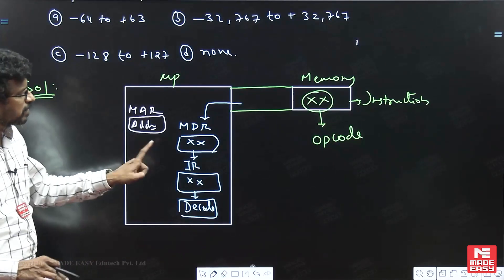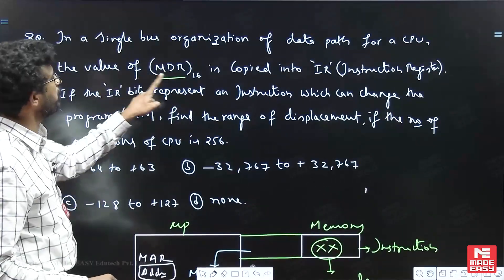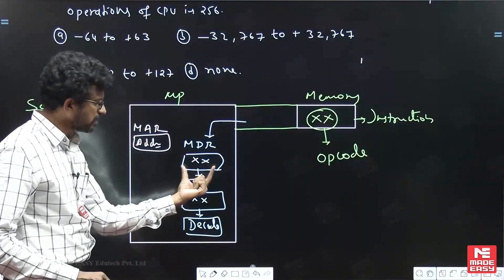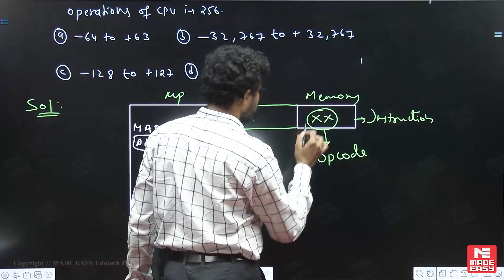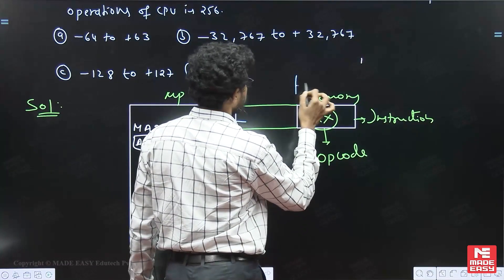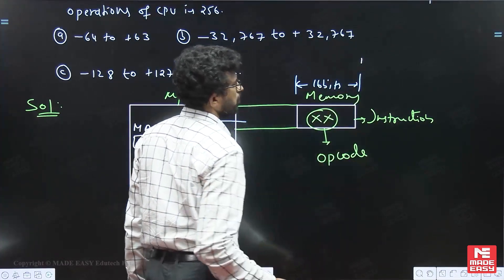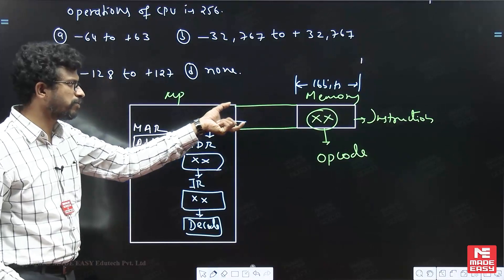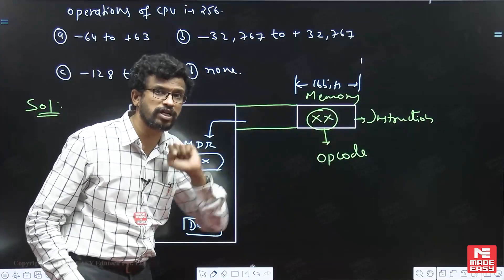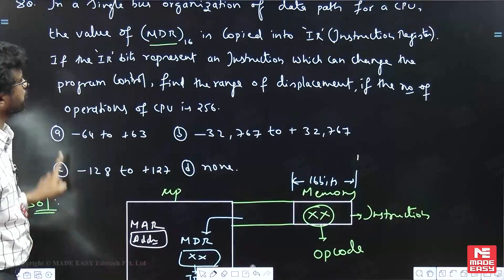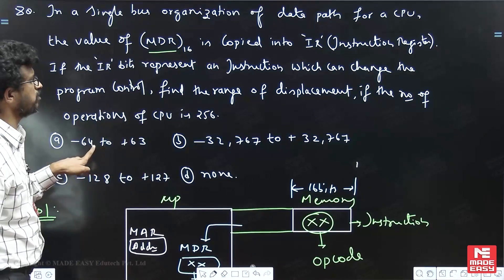He is telling that MDR is 16 bits. If the MDR is a 16-bit register, the value from memory came through the data bus. It means the memory word length here is 16 bits — that is the meaning. Anything that comes from the data bus into the processor enters the MDR, so the data bus is 16-bit and memory word length is also 16-bit. The instruction in the IR is the opcode of some instruction, and this instruction is a branching instruction.